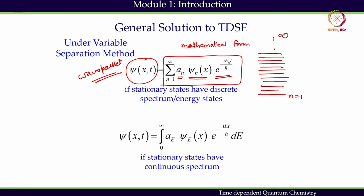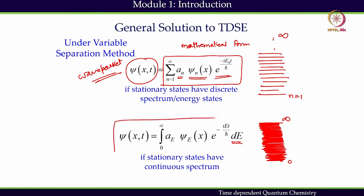If the states are continuous — a kind of continuum — then instead of a sum we use integration directly, integrating from 0 to infinity over dE states. These are the two more mathematically rigorous definitions of the superposition state or wave packet. We will use these expressions later for mathematical derivation, but their origin comes from the two-state superposition we discussed in the earlier session.